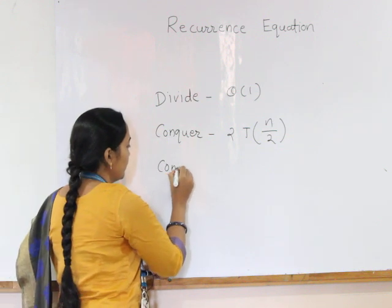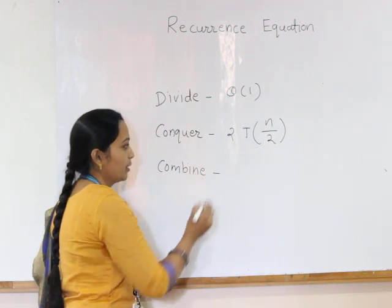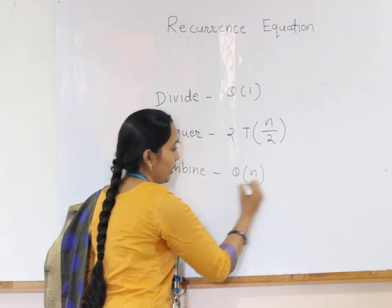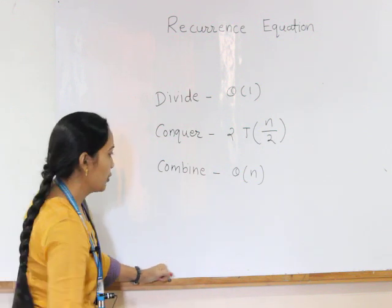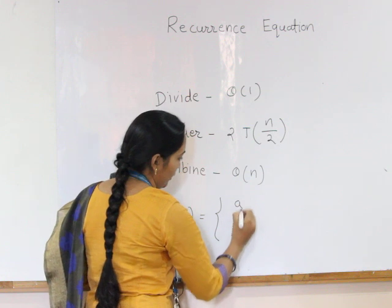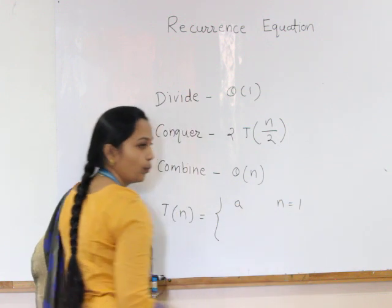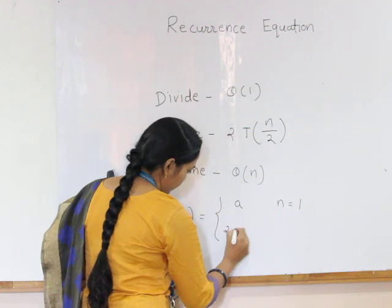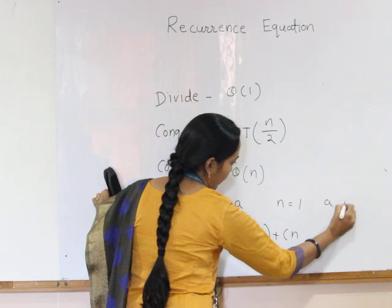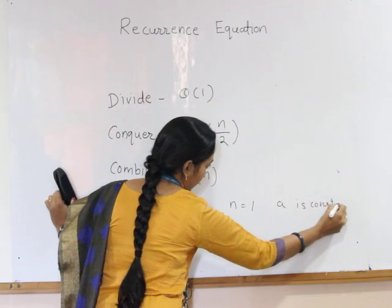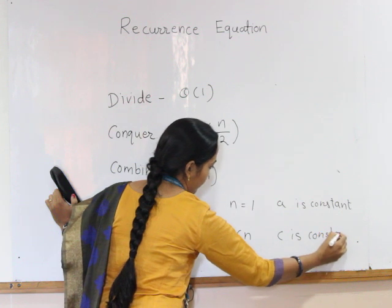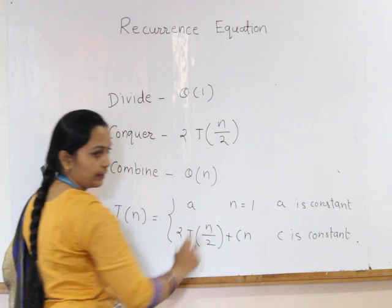The third step is the combine step, which combines the solution of the sub-problems and takes theta of n time. From this, the recurrence equation is T of n equals a when n equals 1, and it is 2T of n by 2 plus cn where a is constant and c is also constant. Here, n is greater than 1.